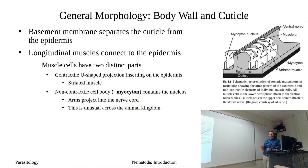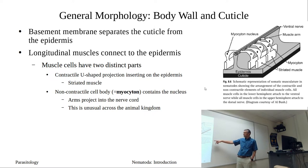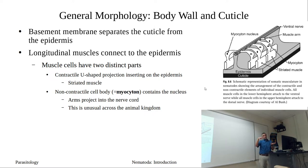We don't typically see that arrangement — normally nerve cells send axons out to innervate muscles, but here the muscles attach directly to the nerve cord. All muscles in the ventral hemisphere attach to the ventral nerve cord, and all muscles on the dorsal side connect to the dorsal nerve cord; there are also some less prominent lateral cords. This connection is through the myocytons and their arms.